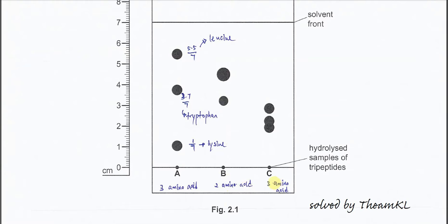And C, it's very clear that it has three spots but this one is a bit overlapped here. So because the retention factor is too close, it cannot separate well. Okay, we'll discuss this later.